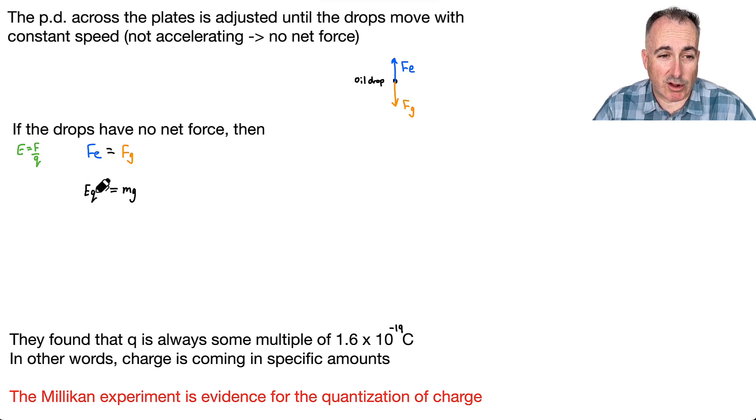And that means if I want to solve for Q then, I'll get Q by itself. The charge is just going to be, well, let's see, it's going to be M times G, and I'm going to divide by E. So it'll just be M G over E, the electric field strength.